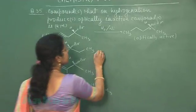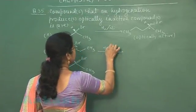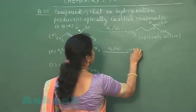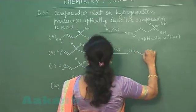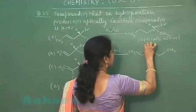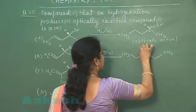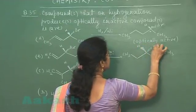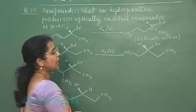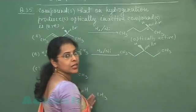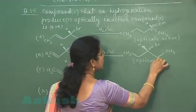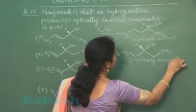If the second compound is given, hydrogenation takes place at the double bond, and the product becomes CH₃ with hydrogen and bromine. Now this carbon atom is not a chiral carbon atom because both groups attached to it are similar. So this compound is optically inactive — an optically inactive product is obtained.